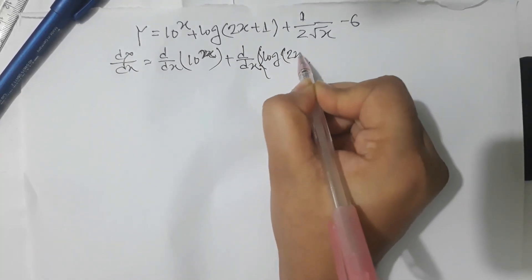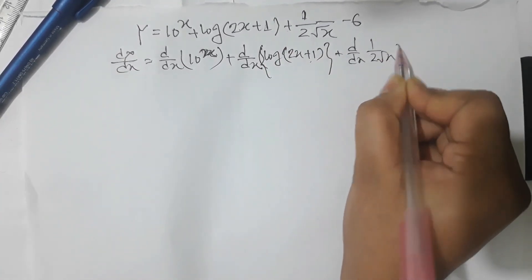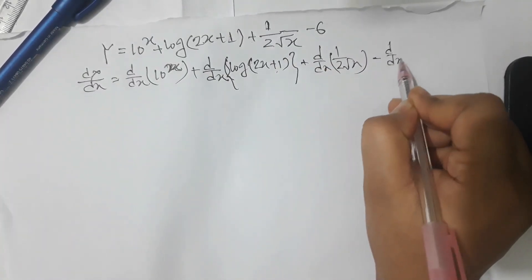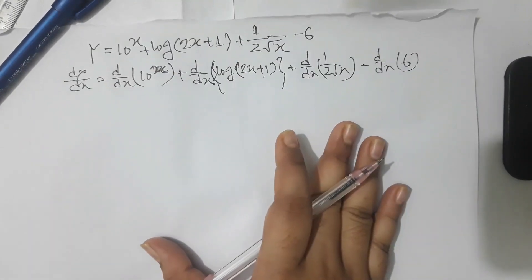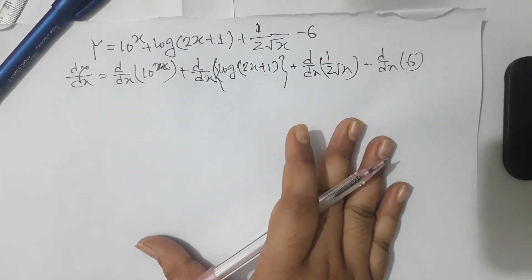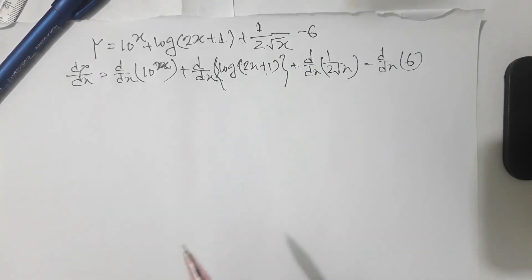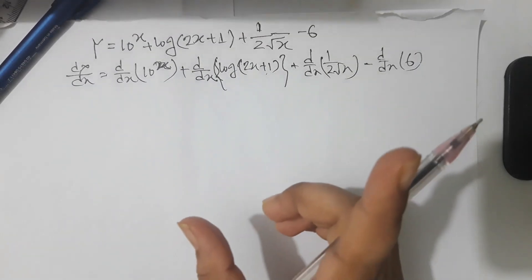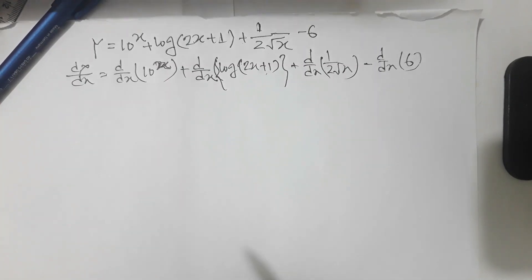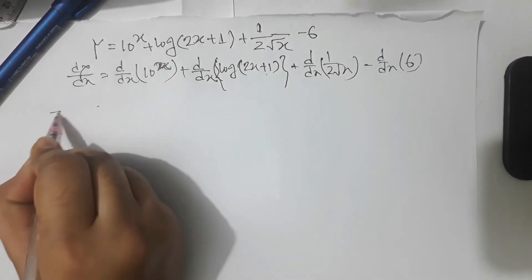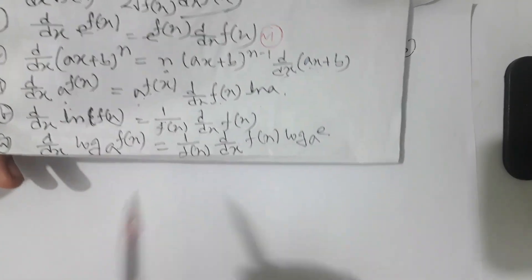2x plus 1. ddx of 1 by 2 root x, minus ddx of 6. ddx, ddx, ddx. Hello, ddx.